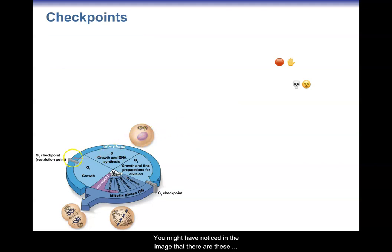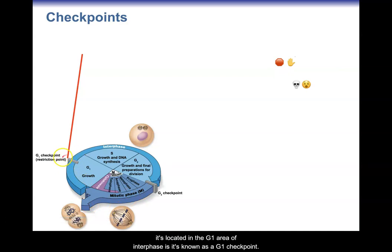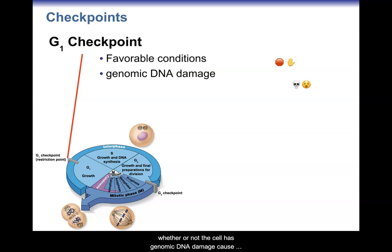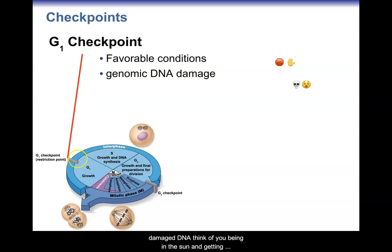You might have noticed in the image there are gray barriers that look like little walls. These are known as checkpoints. There's a G1 checkpoint — also called a restriction point — located in the G1 area of interphase. The G1 checkpoint checks for favorable conditions and whether the cell has genomic DNA damage. If a cell has damaged DNA, you don't want to copy it during S phase. Think of being in the sun — sometimes genetic damage occurs on skin cells, and they're not going to want to replicate if they have faulty DNA. This checkpoint accounts for that.